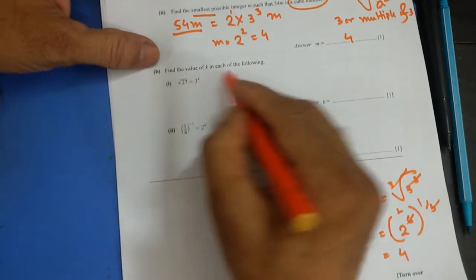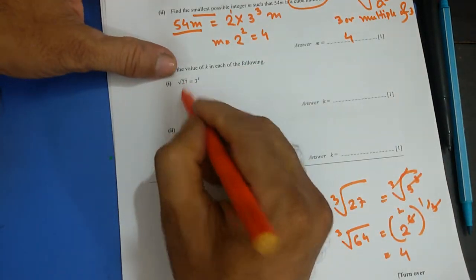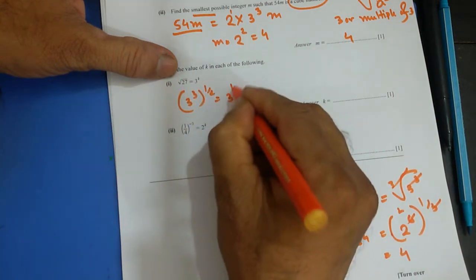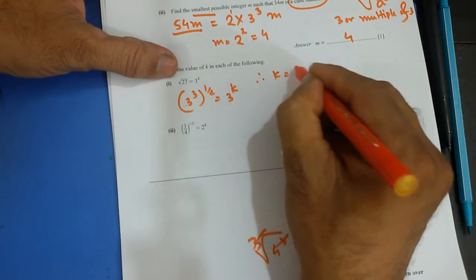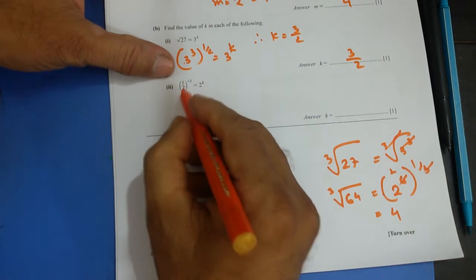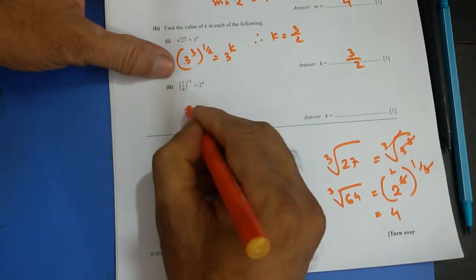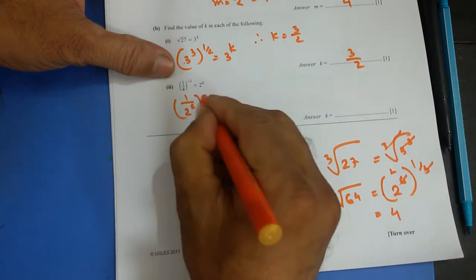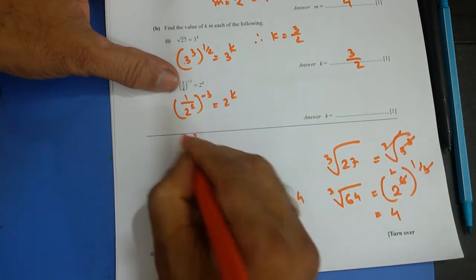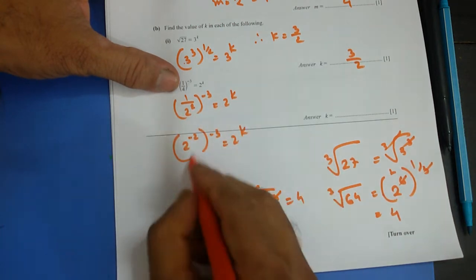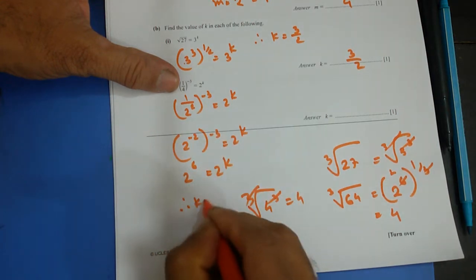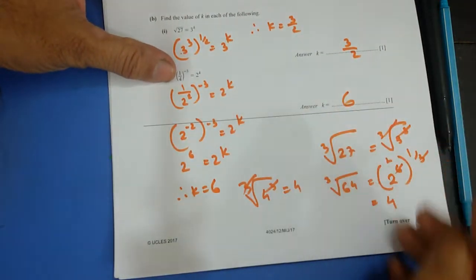Part B: find the value of k in each of the following. The first gives 3 to the power 3/2 equal to 3 to the power k, so k equals 3/2. The next one: (1/2 squared) to the power 3 equals 2 to the power k. Bringing it over: 2 to the power −2, then to the power −3, equals 2 to the power k. So 2 to the power (−2 × −3) = 2 to the power 6, therefore k = 6.